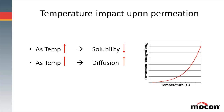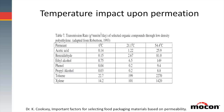That actually follows something called an Arrhenius equation, used a lot in chemistry — if you want your chemistry to happen quicker, you increase your temperature. Here's an example of data on polyethylene looking at different permeants. You can see that when you increase the temperature, the transmission rates do increase quite dramatically.